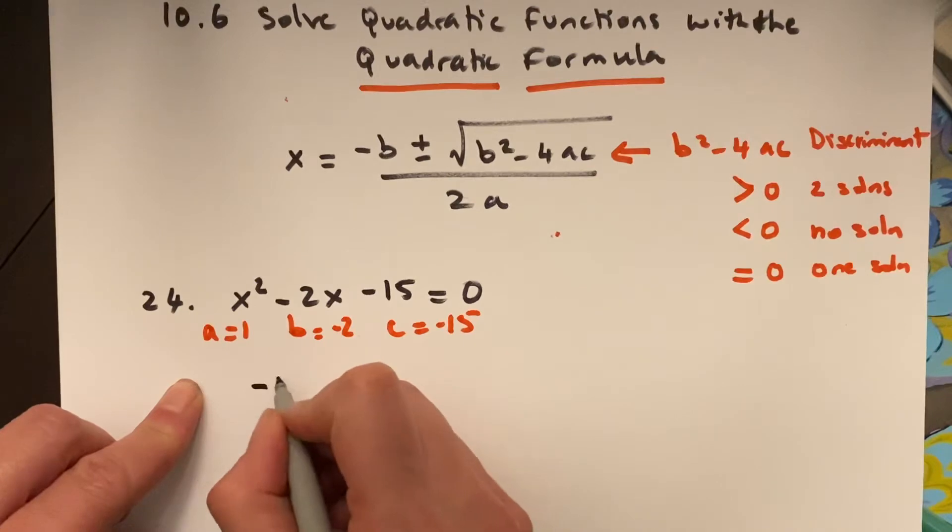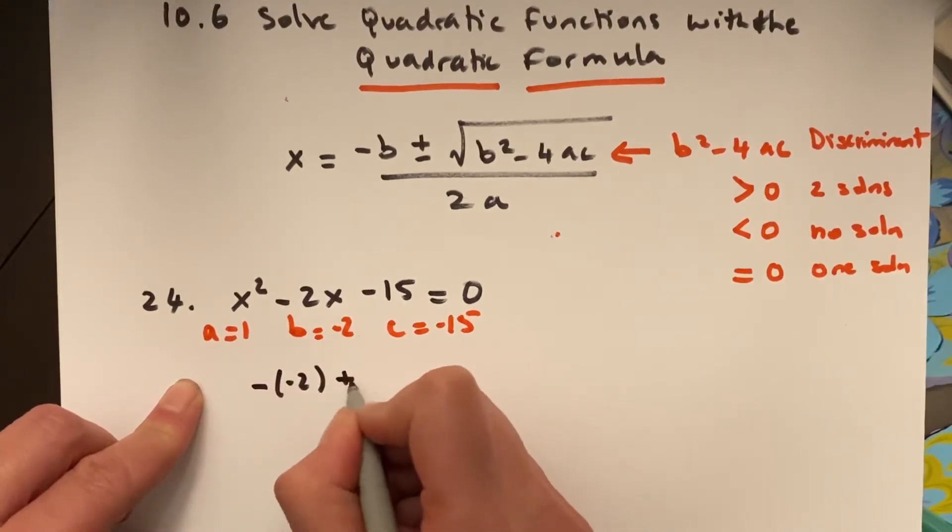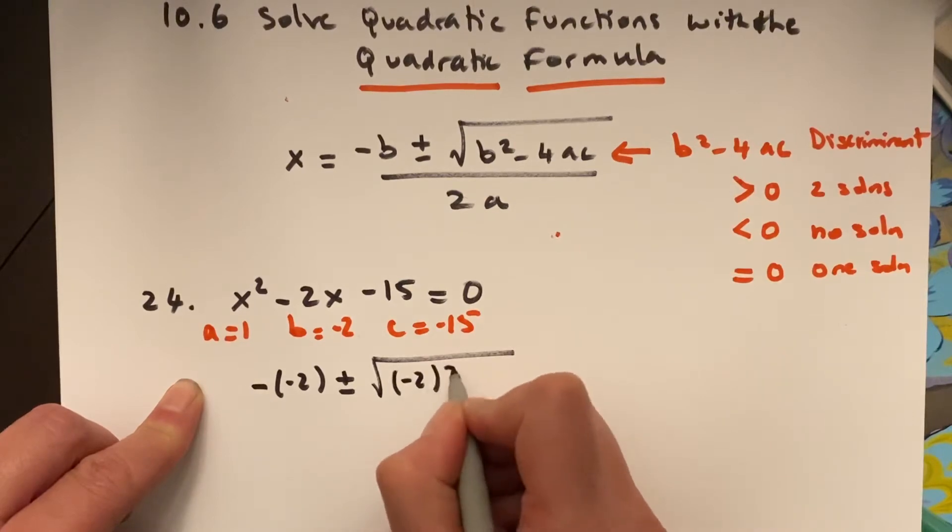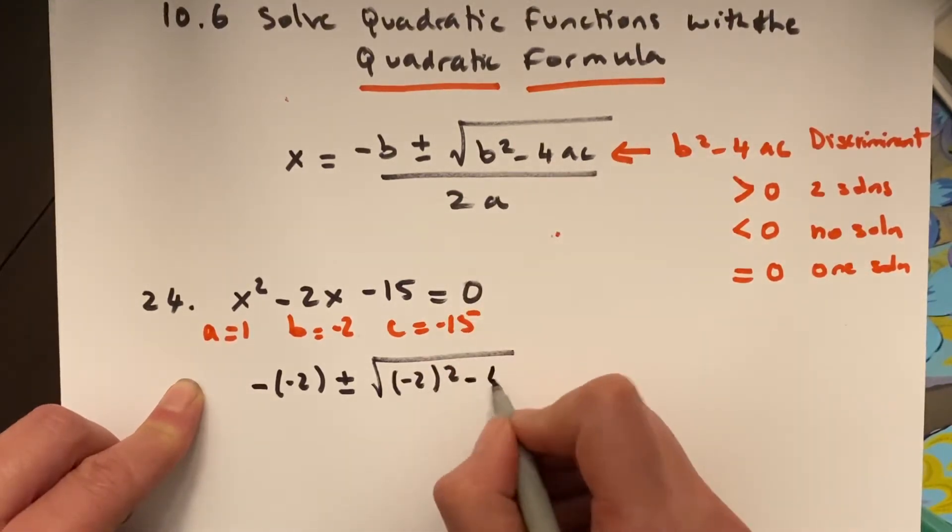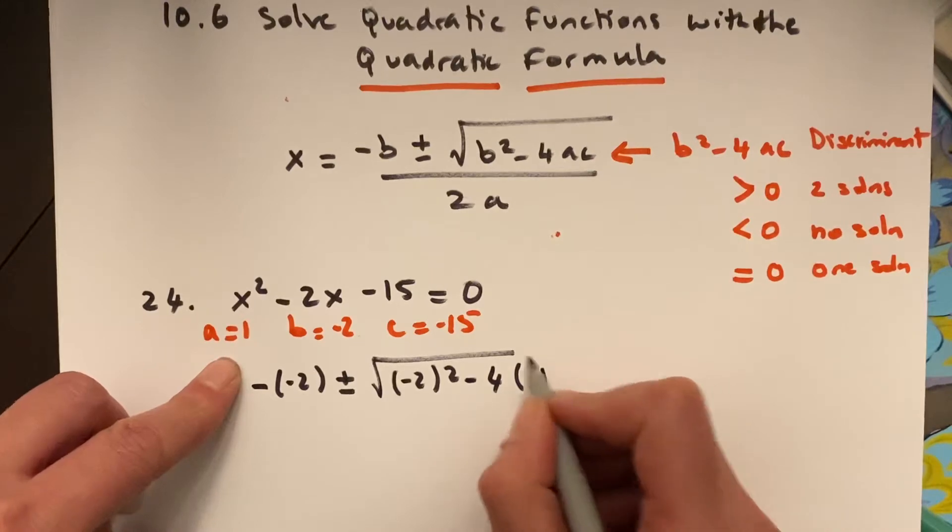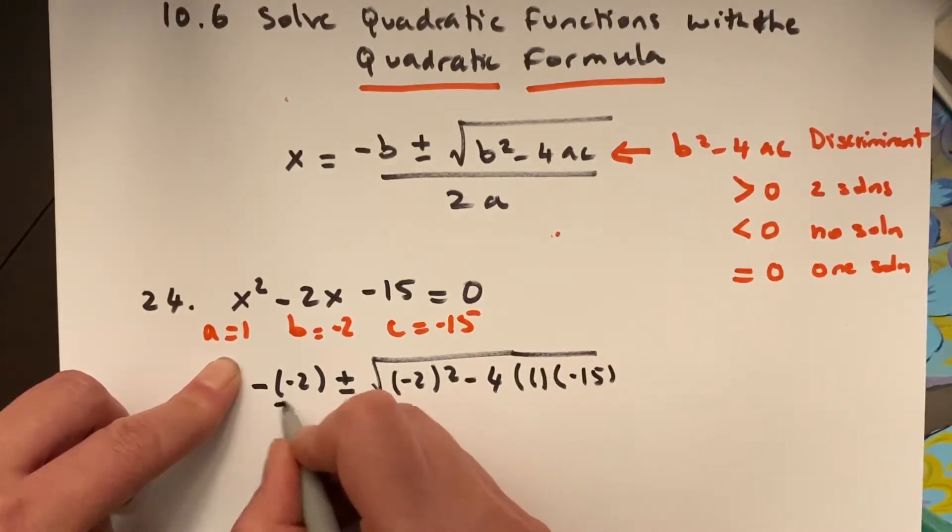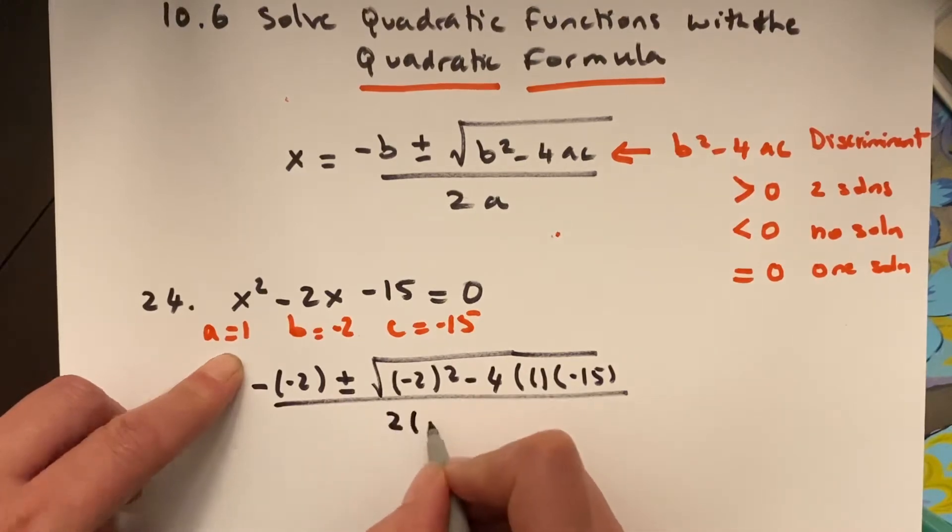Negative b, negative, negative 2, plus or minus the square root of negative 2 squared, right? b squared minus 4 times a is 1, and c is negative 15, over 2 times 1.